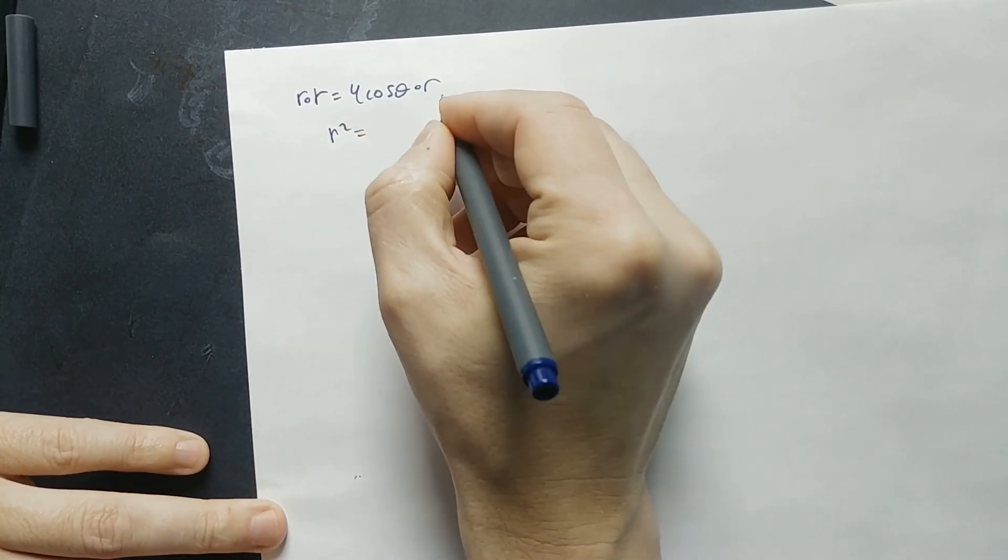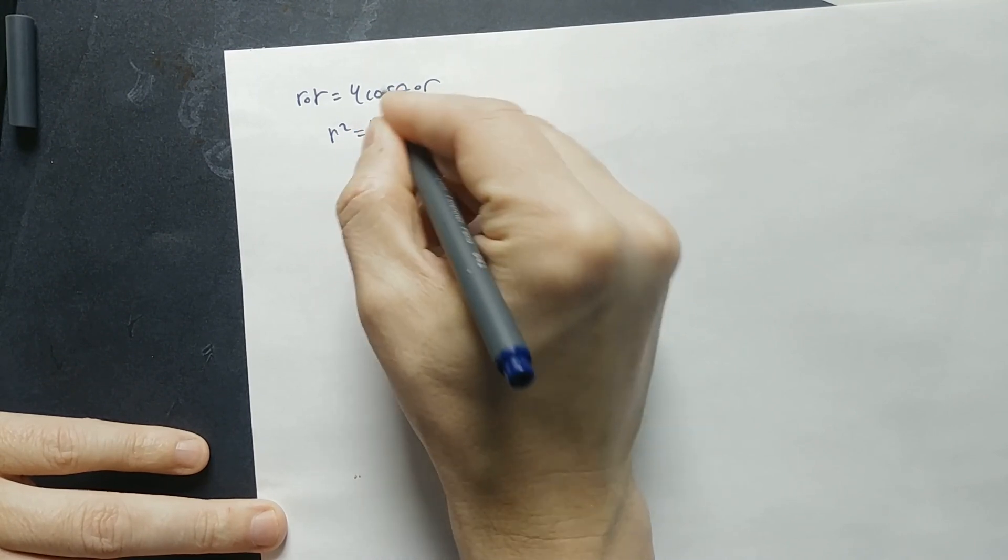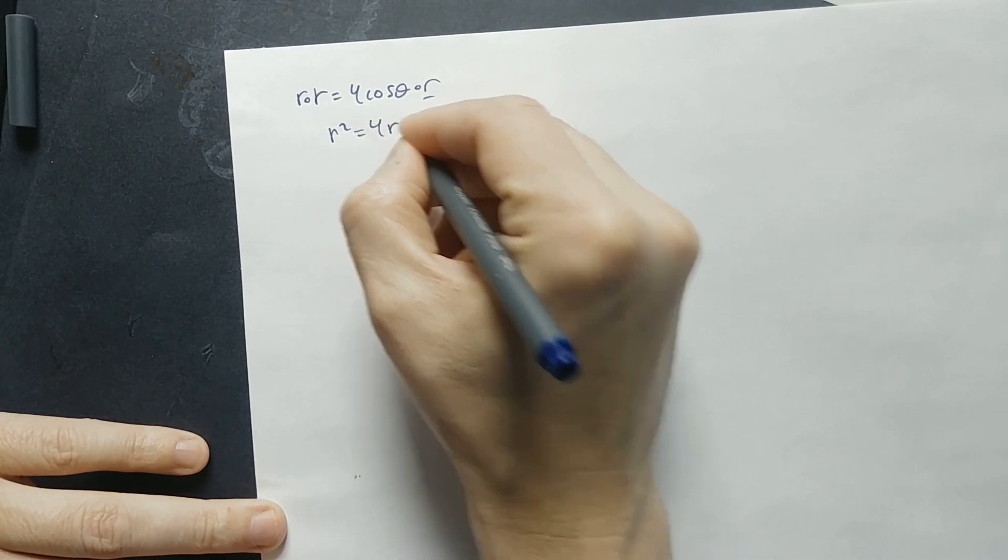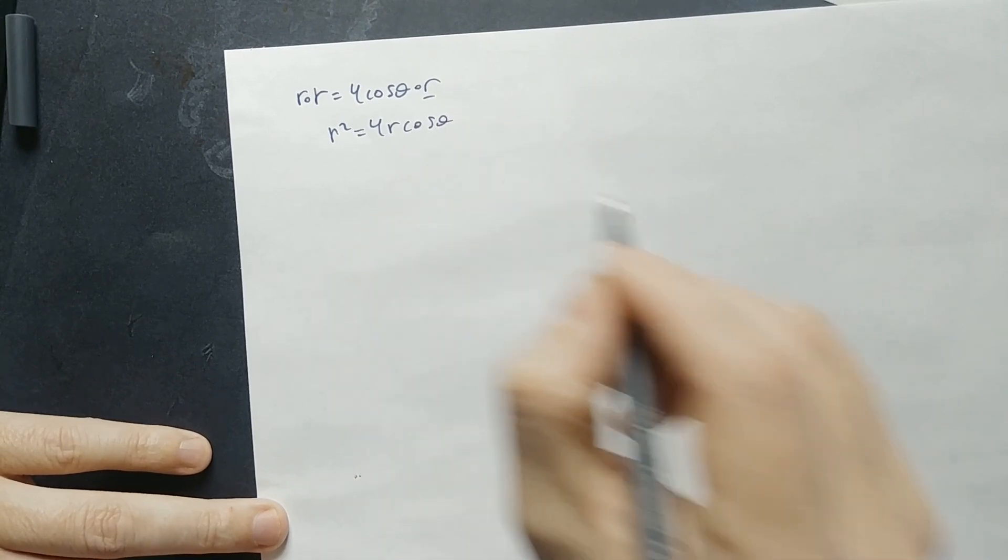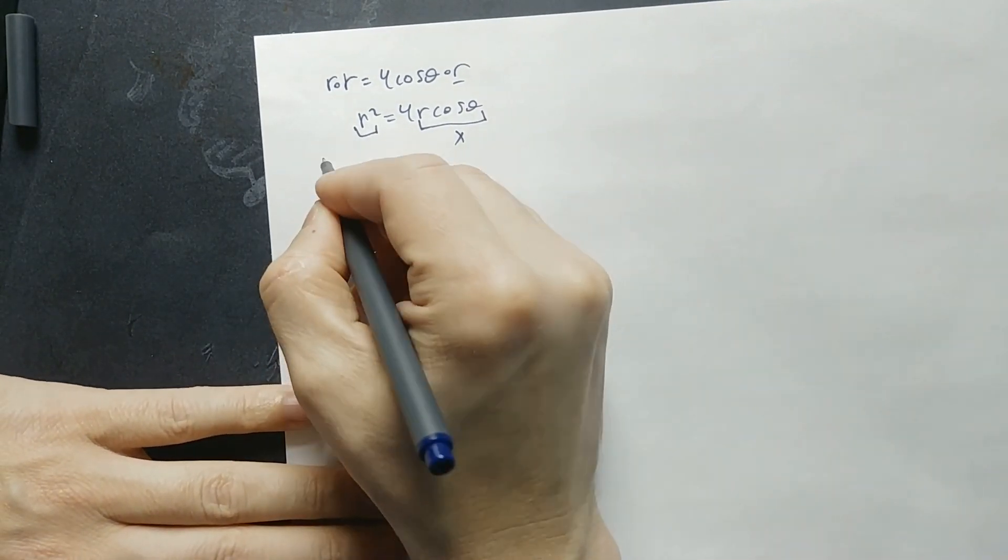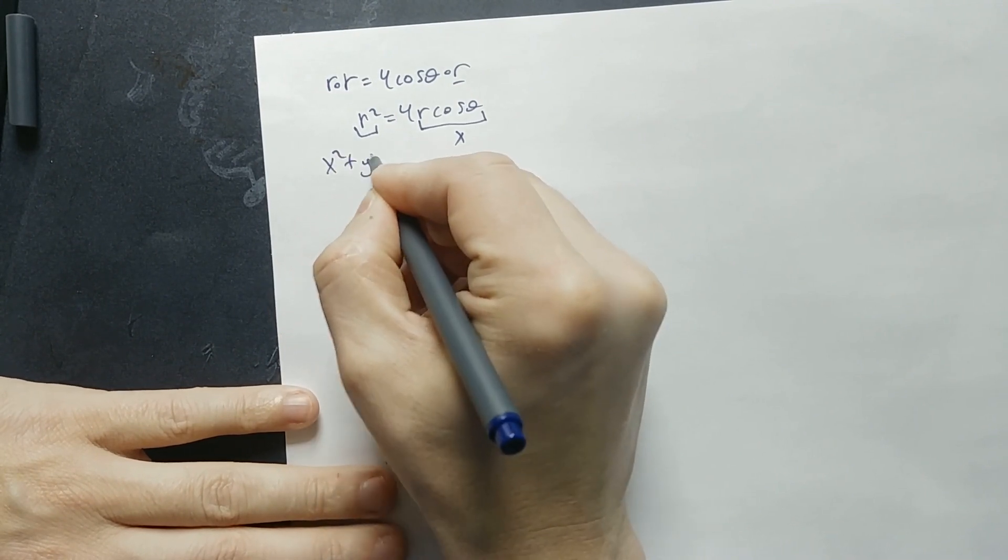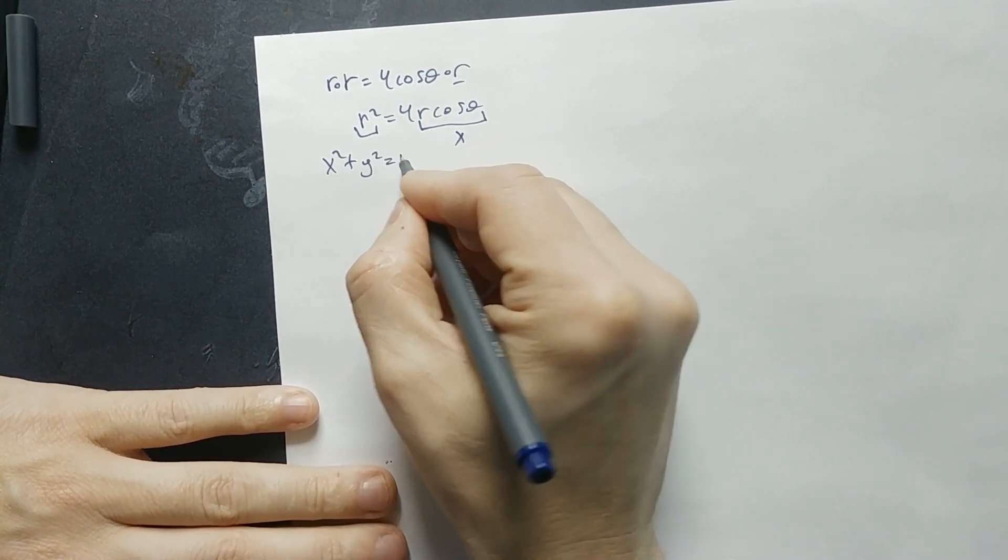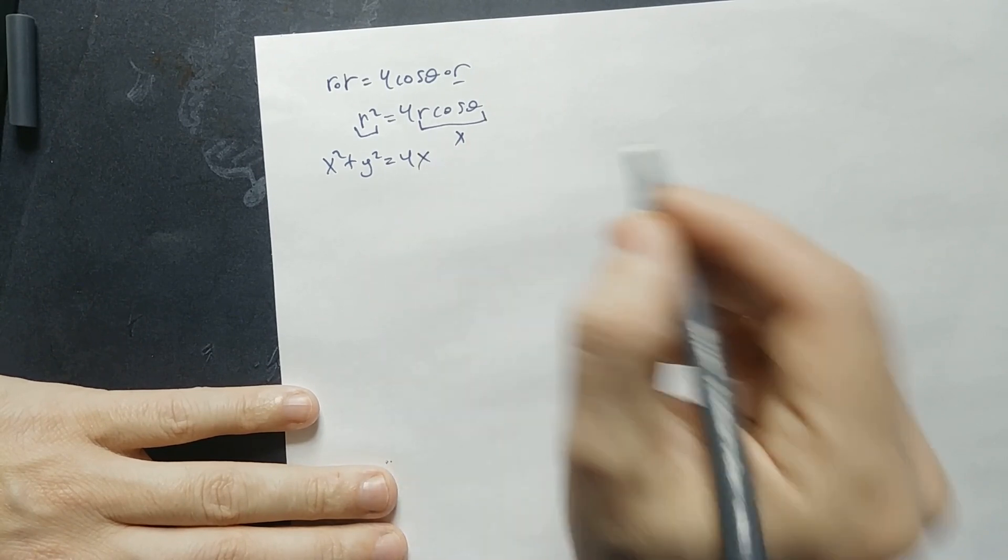So it's going to give you r squared is equal to 4. I usually put the r by the cosine, so it's going to be r cosine theta. And then here, this is x and this quantity, the r squared is always x squared plus y squared. So we have x squared plus y squared equals 4 times x.